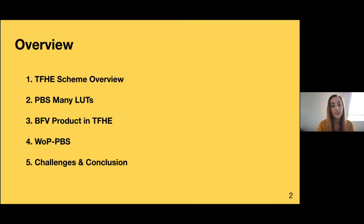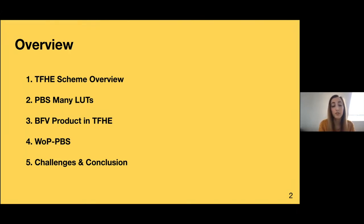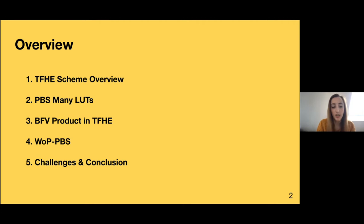So before we start, let's see a little overview of what we're going to present today. The presentation is going to be split in five major parts. We're going to start with an introduction of the TFHE schema, then present our improvements: the PBS ManyLoot, the BFV product into TFHE, and the WoPBS. And then we're going to finish with some challenges and conclusions.